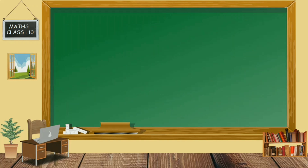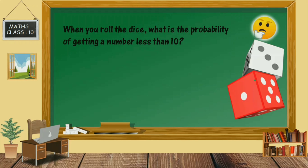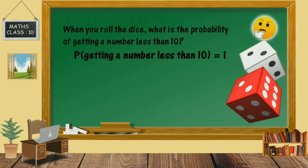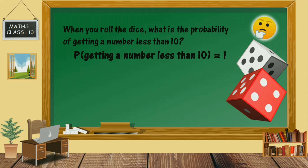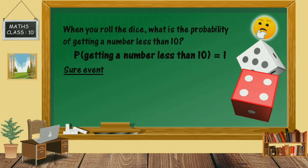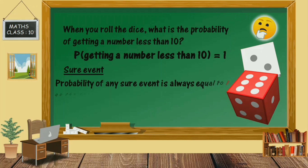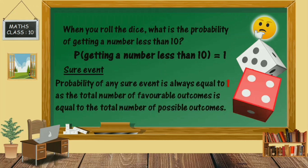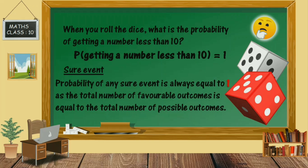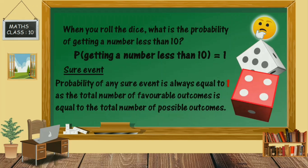Next, when you are rolling the dice, what is the probability of getting a number less than 10? The probability is going to be 1, because the number of favorable outcomes is 6 and the total outcomes is also 6. So the probability is going to be 6 by 6, which is equal to 1, or 100 percent. This is called a sure event or certain event. In this situation, the number of favorable outcomes is equal to the total outcomes.